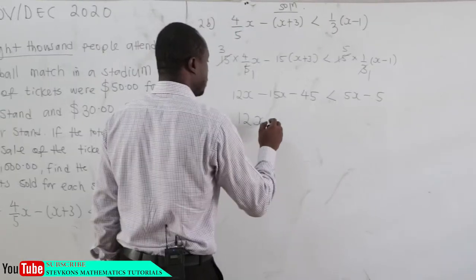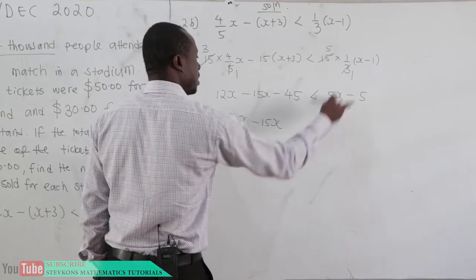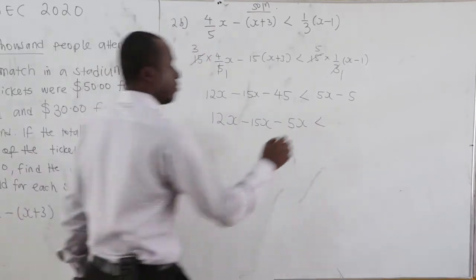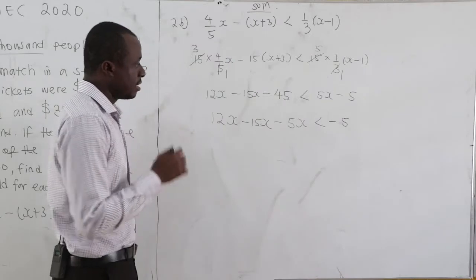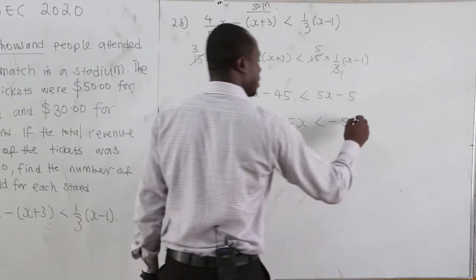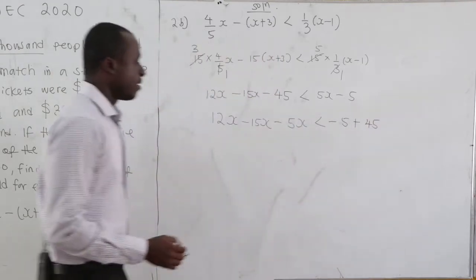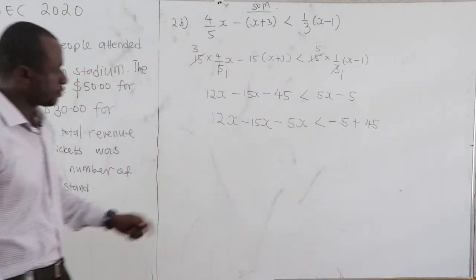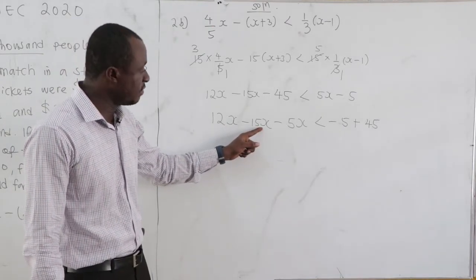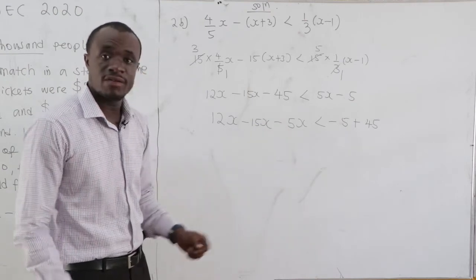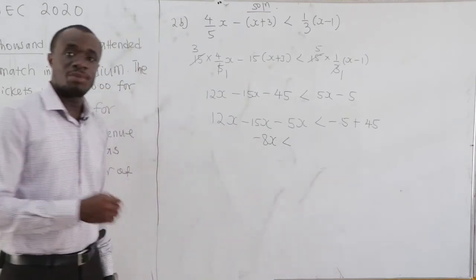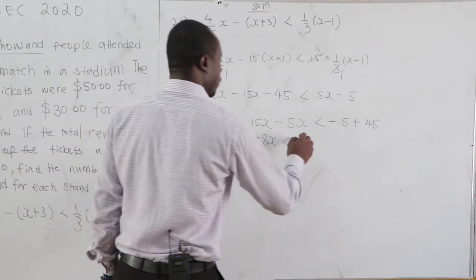Grouping like terms: we have 12X minus 15X minus 5X on the left, which is negative 3X minus 5X, giving negative 8X. On the right-hand side, negative 5 plus 45 gives 40. So we have negative 8X less than 40.